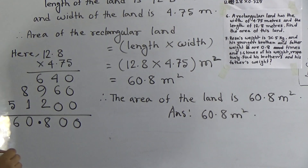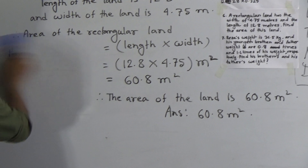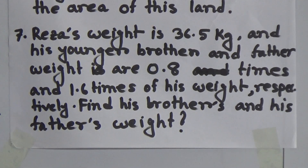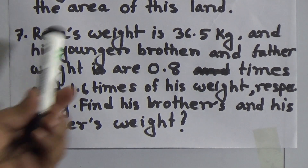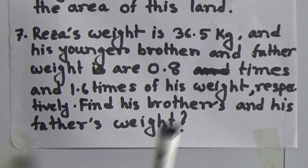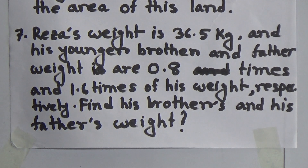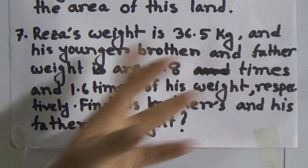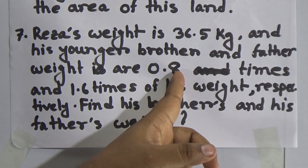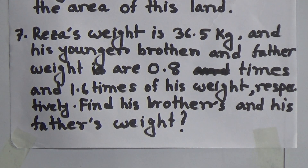I hope you have understood this question. Next, we shall solve question number 7. Reza's weight is 36.5 kg and his younger brother's weight is 0.8 times of his weight, and his father's weight is 1.6 times of his weight respectively. Find his brother's and his father's weight. We multiply 36.5 by 0.8 to get the younger brother's weight, and we multiply 36.5 by 1.6 to get his father's weight. Easy math.